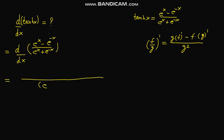In the denominator we have the square of e to the power x plus e to the power negative x. In the numerator, e to the power x plus e to the power negative x times the derivative of e to the power x minus e to the power negative x, which gives us e to the power x plus e to the power negative x.